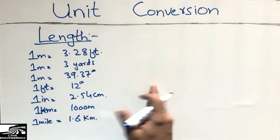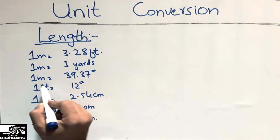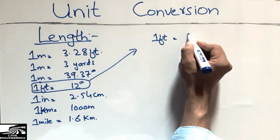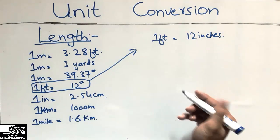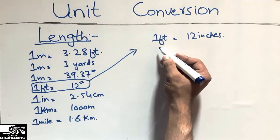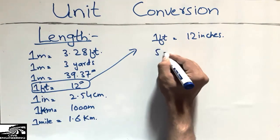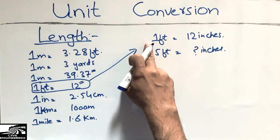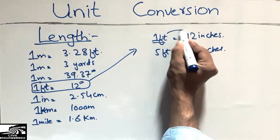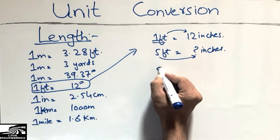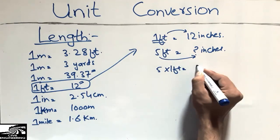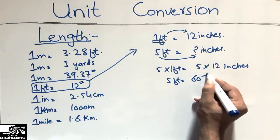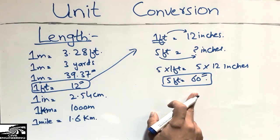The first example: how to convert feet into inches. We know that one foot is 12 inches. If someone asks how many inches are in five feet, we just multiply five by 12. So five multiplied by one foot equals five multiplied by 12, and we get five feet equals 60 inches.